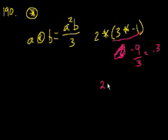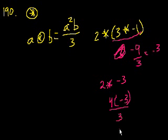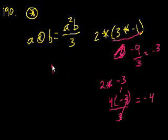So this reduces to 2⊛(-3), which is equal to 2 squared — which is 4 — times minus 3, all over 3. Minus 3 divided by 3 is minus 1, so we have minus 1 times 4 equal to minus 4. And that's choice E.